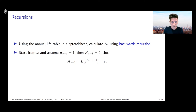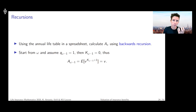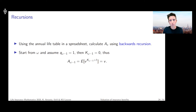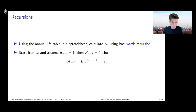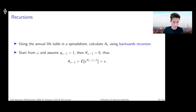That gives us a very simple expression for the actuarial present value of a one-unit benefit whole life insurance product sold to a policyholder aged omega minus one. Using the formulas from last week, that becomes the expected value of v to the power K_{ω-1} plus one. But this curtate future lifetime random variable always takes the value zero, so you're left with a deterministic number — just v. So we have a starting point: A_{ω-1} = v.